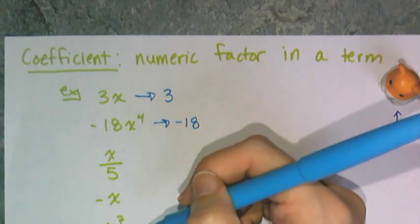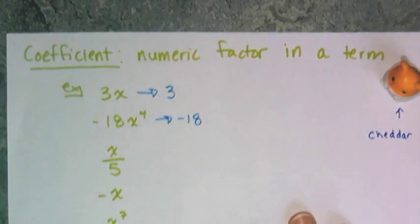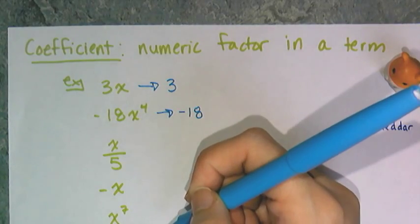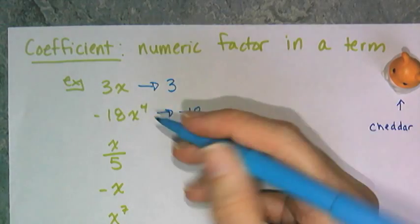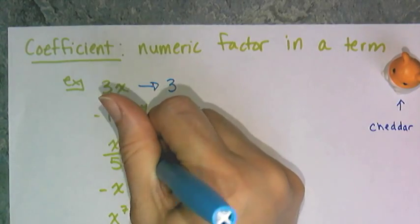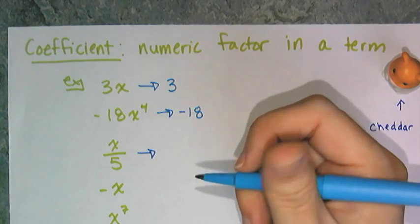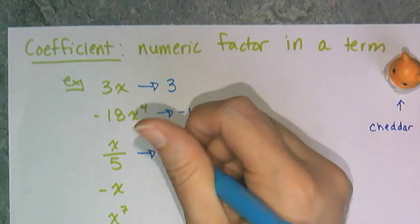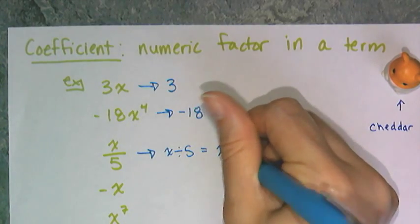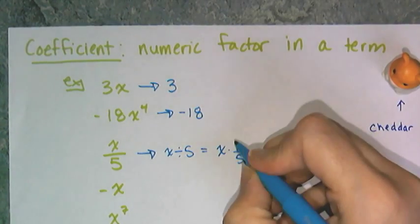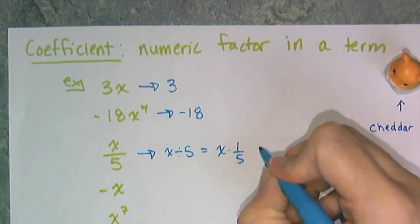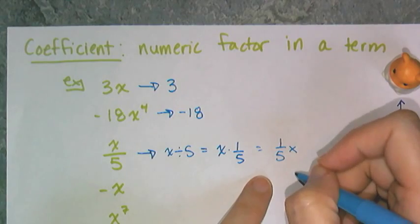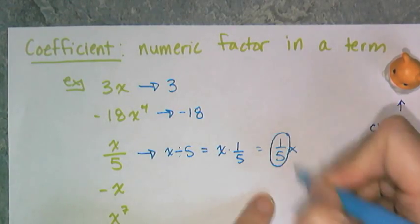These next three, not so straightforward. When I have a quotient like this, X over five, this has a coefficient as well, but it's not five. You have to rewrite the term so it has a multiplication. So X divided by five is the same thing as X times one fifth. If I use the commutative property and rearrange this to one fifth X, then I can see that the coefficient is one fifth.